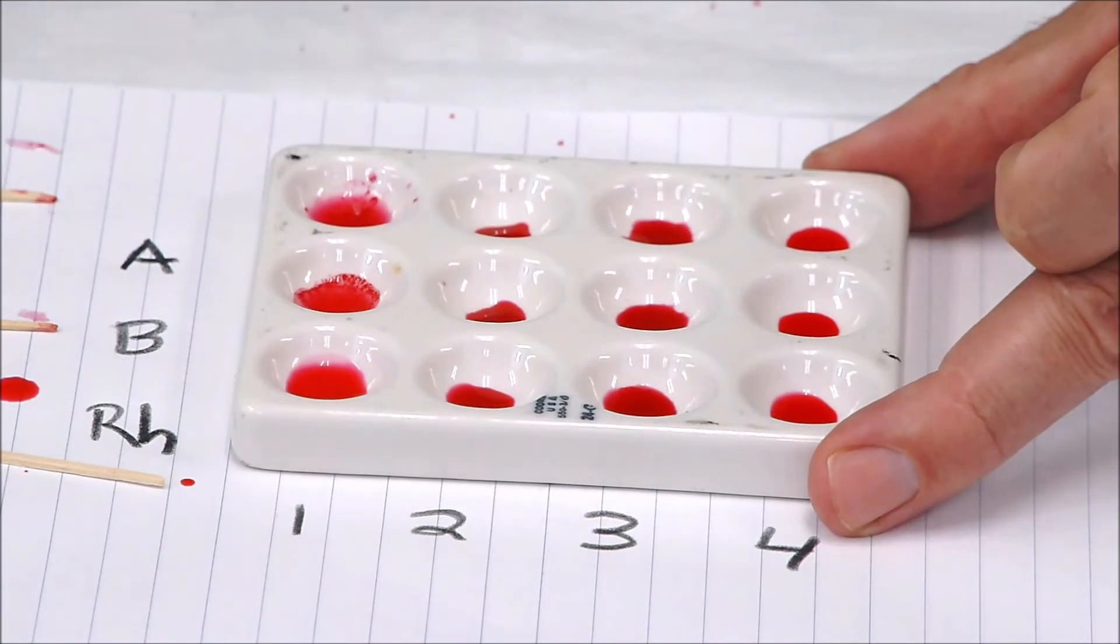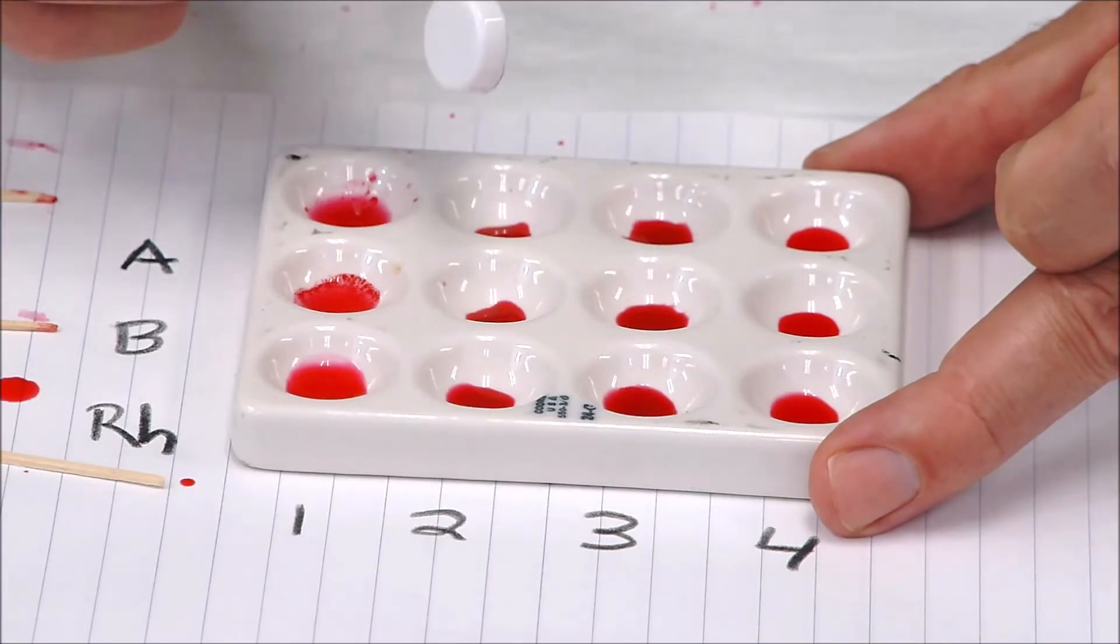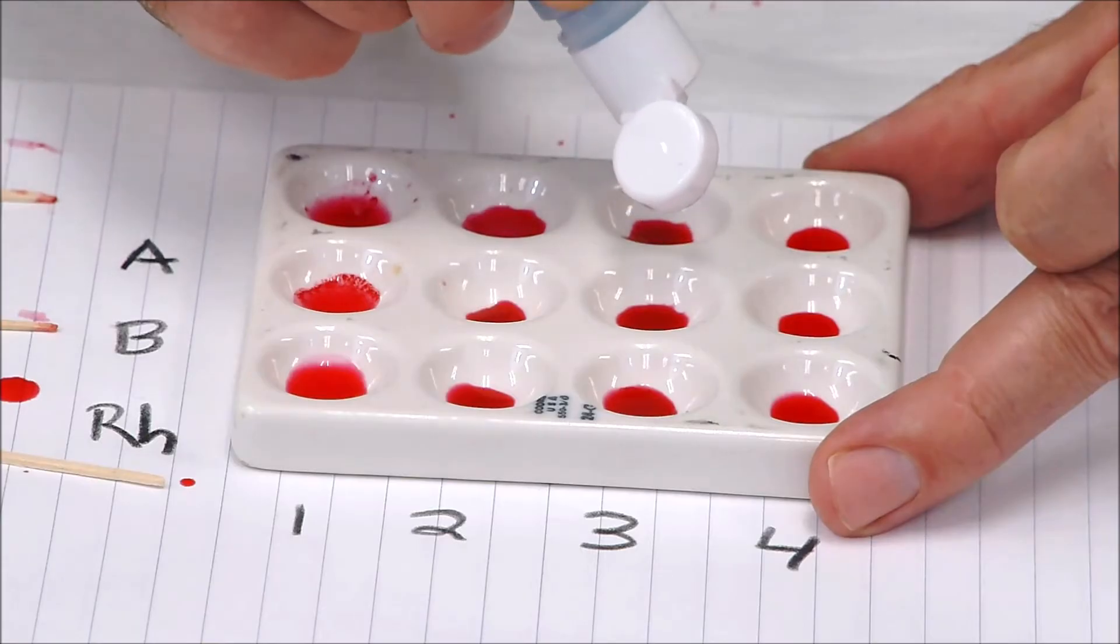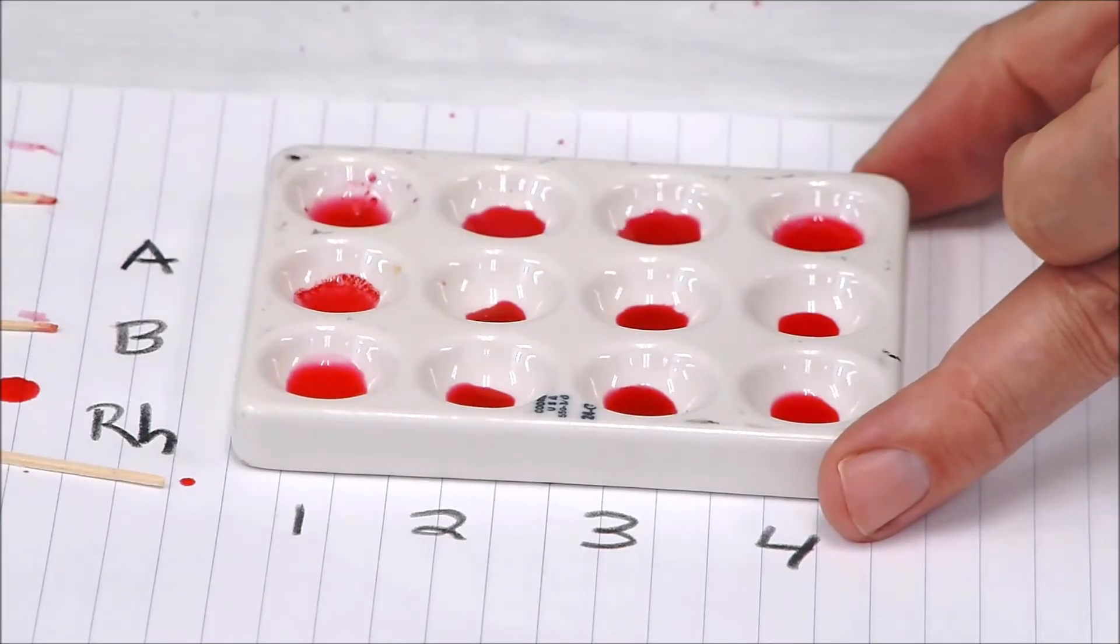Okay, again trying not to cross-contaminate anything. So samples two, three, and four—I can go ahead and add my A. So A antibody is going to go across this way: sample two A, sample three A, sample four A. I'm going to do the same thing for my anti-B: one, two, three.